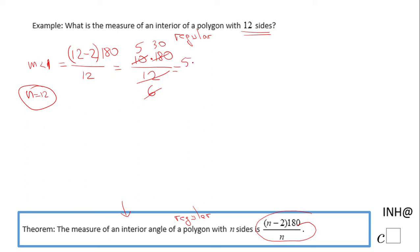So we have here 5 times 30. The measure of angle 1 will be 150 degrees. 5 times 30 is 150 degrees. This is the measure of the interior angle of a polygon with 12 sides.